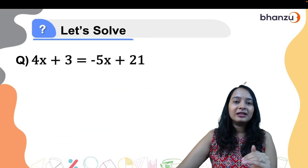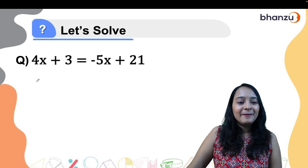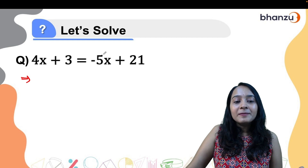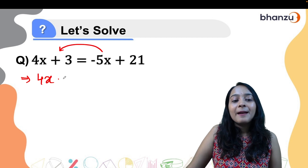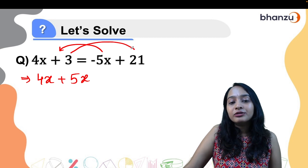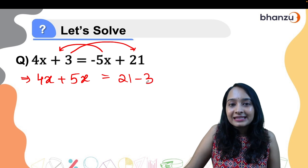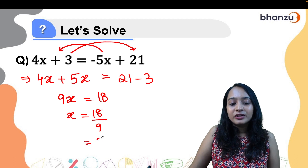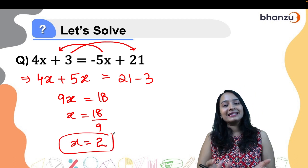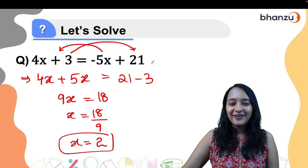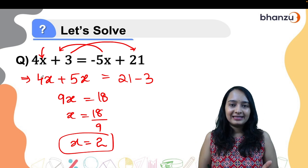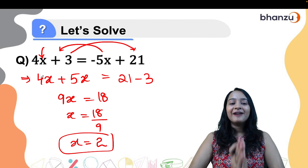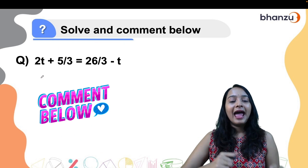Let's do one more question. You can pause the video here and solve it yourself, then check if you got it right. Bringing minus 5x to this side gives 4x plus 5x, and taking plus 3 to the other side gives 21 minus 3. So 9x equals 18, meaning x equals 18 by 9, which is 2. To verify, substitute 2 in place of x — if the left hand side equals the right hand side, the answer is correct.